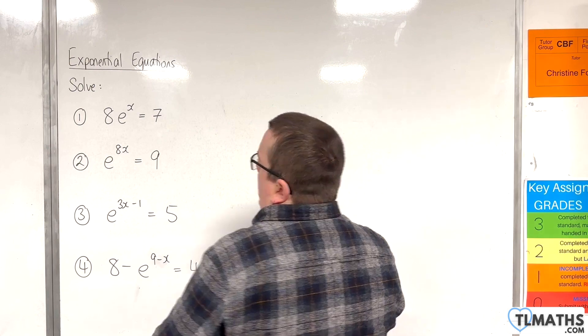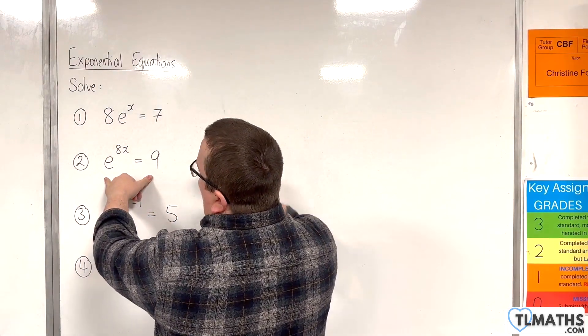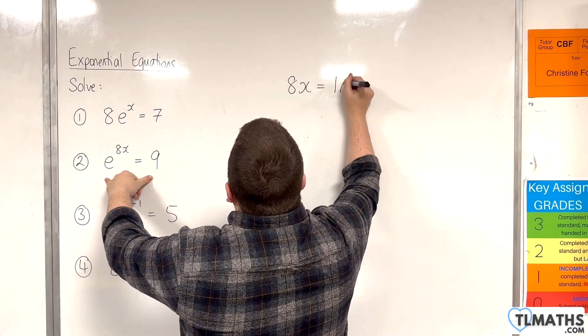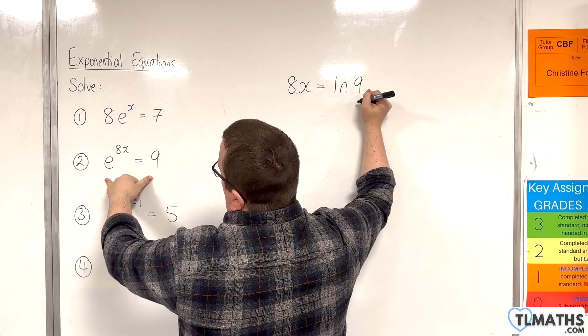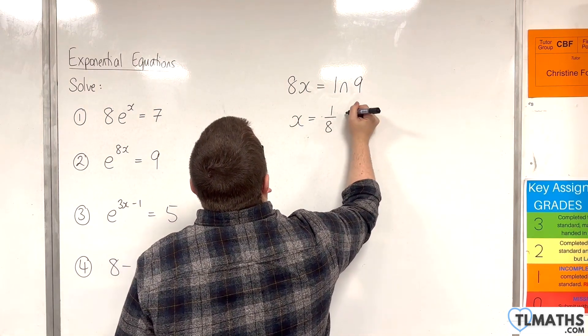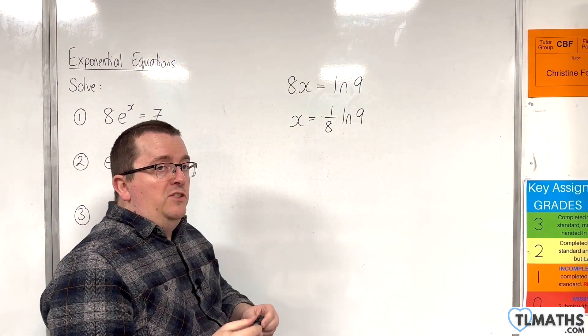Number two: we have e^(8x) = 9. We can go straight from exponential form to logarithmic form, so 8x will be the natural log of 9. Divide both sides by 8, and we'll have x is 1/8 ln 9. That's my answer to number two.